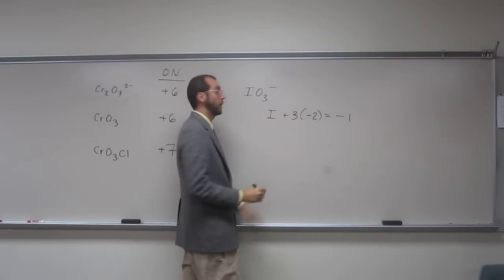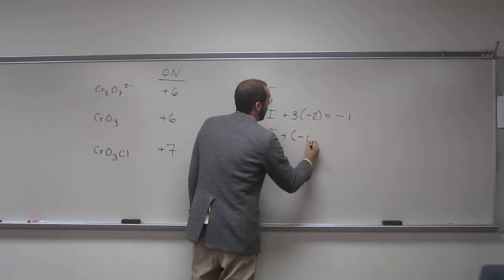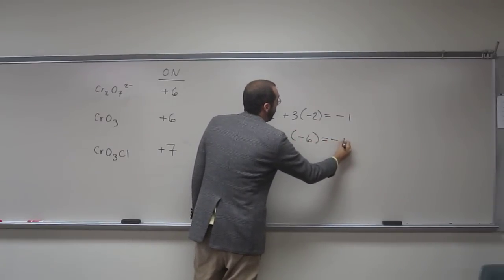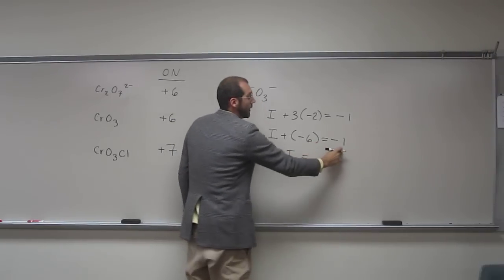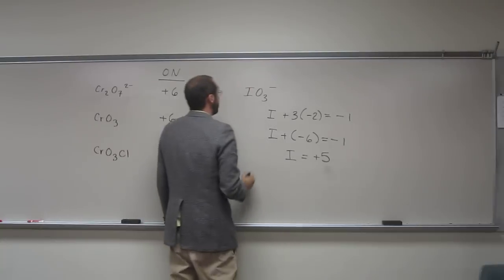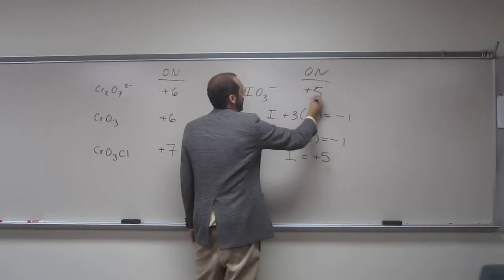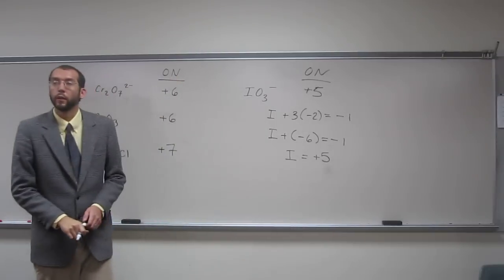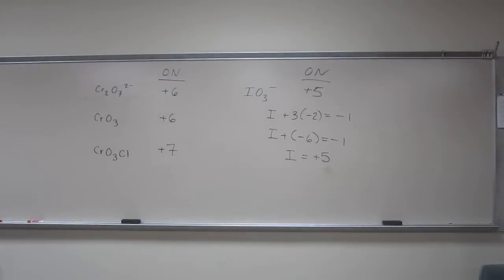So when we do that, add 6 to both sides, 6 plus minus 1 is plus 5. So in this case, the oxidation number, does that make sense? So every time you're going to set it equal to that number in the top, the charge or oxidation number, if you prefer.